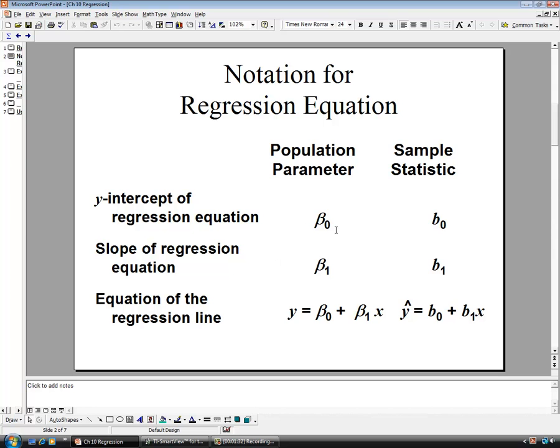Beta sub-zero is the actual y-intercept, and our sample statistic for that, our estimate, is b sub-zero. That estimates the actual y-intercept. Similarly, beta-one is the true slope of the regression equation, whereas b1 is our estimate of that.